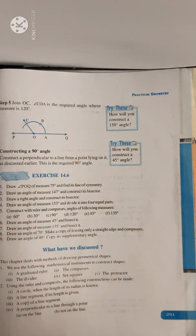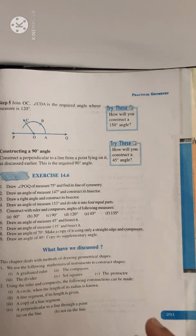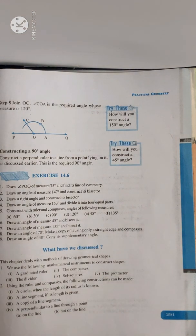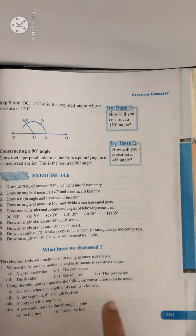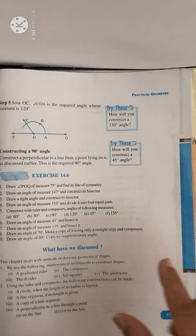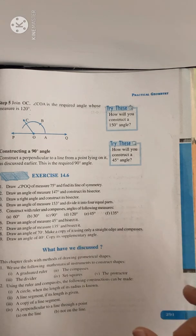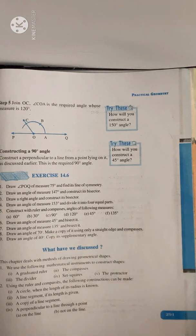Now, 45 degrees. First we draw 90 degrees, and then we will draw the bisector of 90. That will give us 45 degrees. Bisector means the 90 degree angle is divided into two equal parts, so 45 is half of 90 degrees. For doing that, we draw 60 degrees, 120 degrees, then 90 degrees — because 90 lies between 60 and 120.